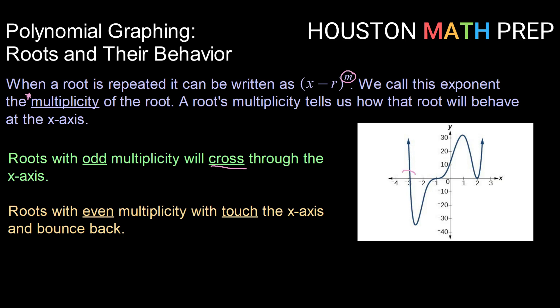Looking at this example graph, I see that at negative 3, we must have had an odd multiplicity because our graph crosses through the x-axis. That is also true again here at negative 1. Our graph crosses through the x-axis, so it must have an odd multiplicity as well.